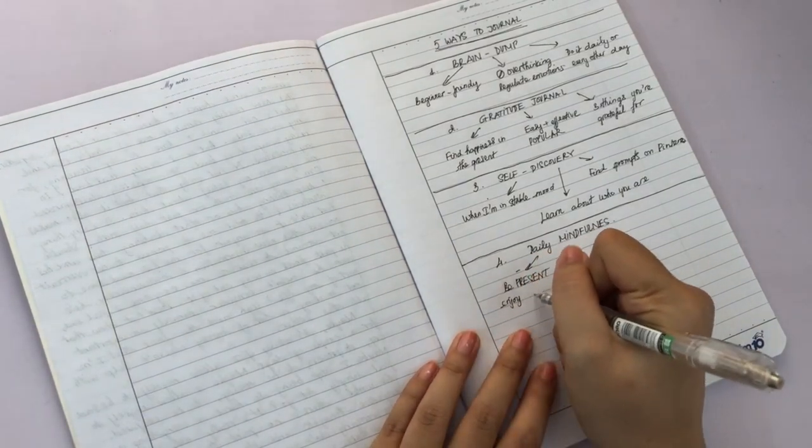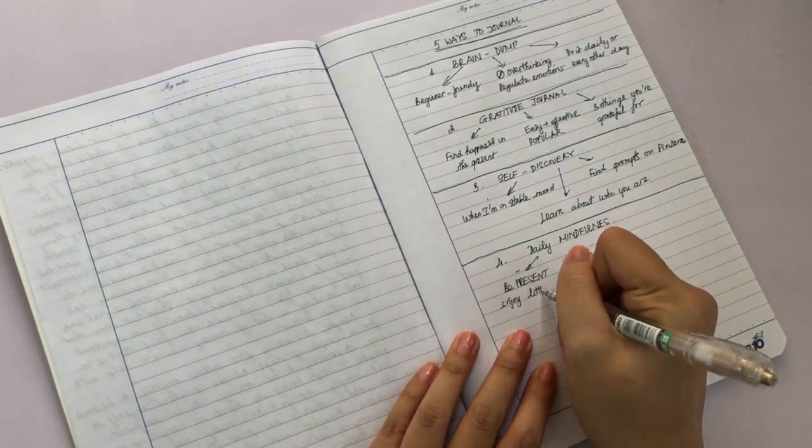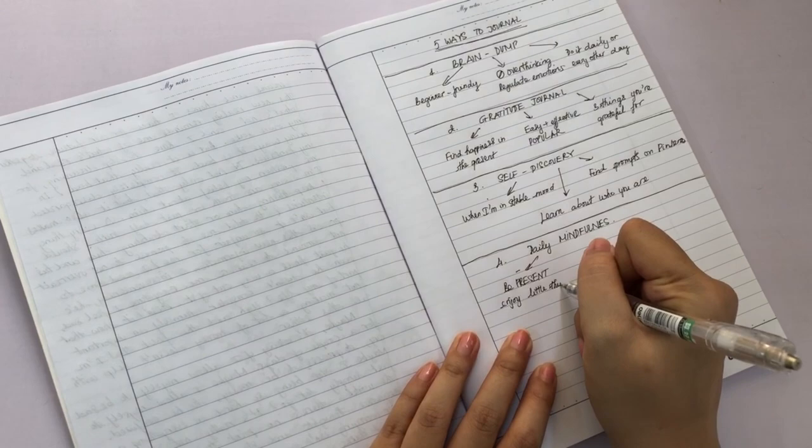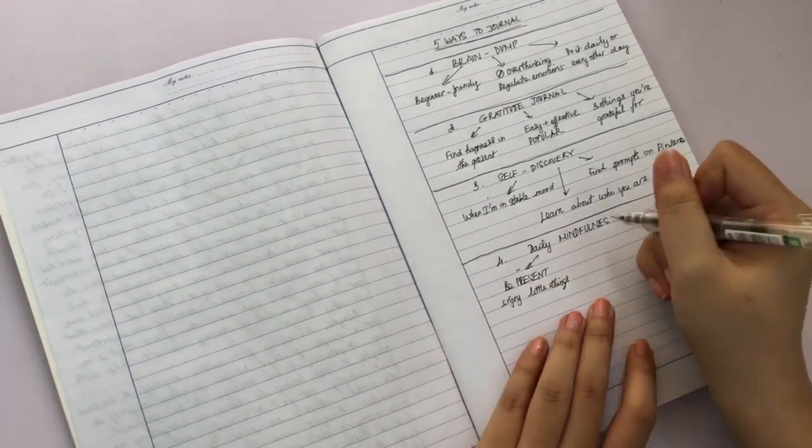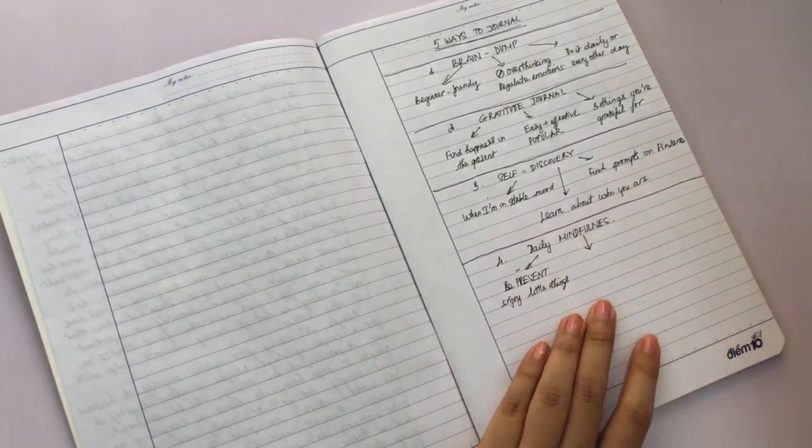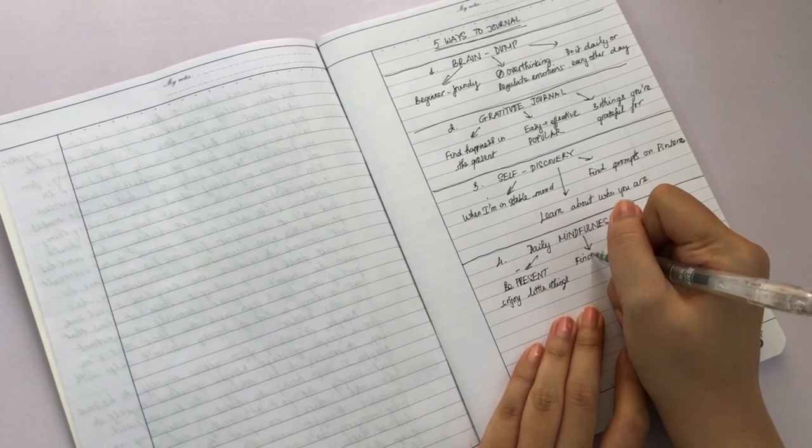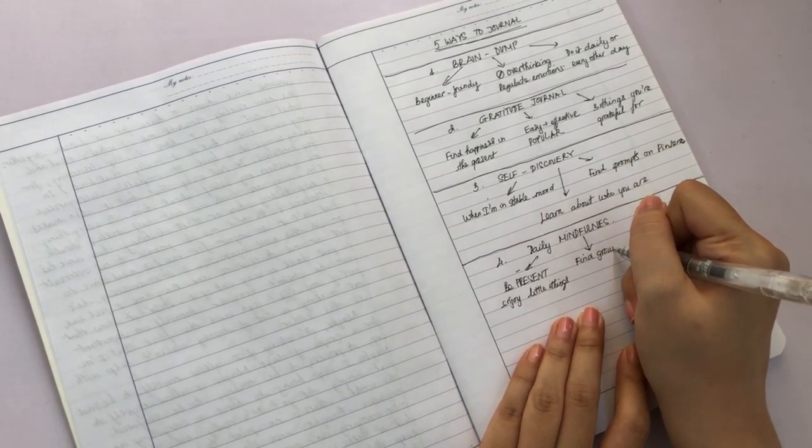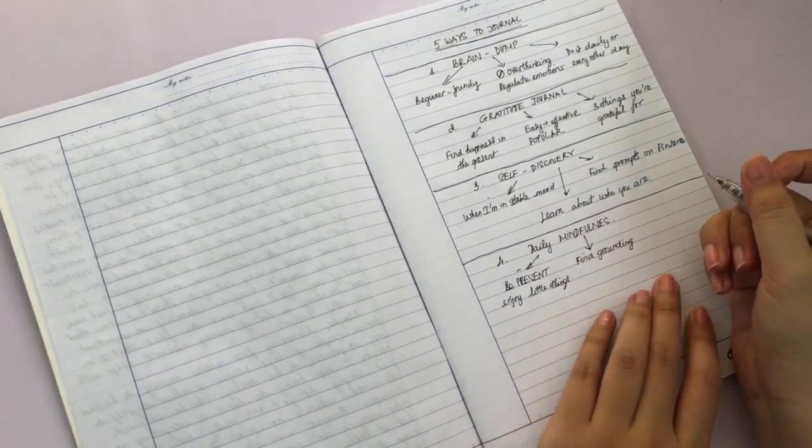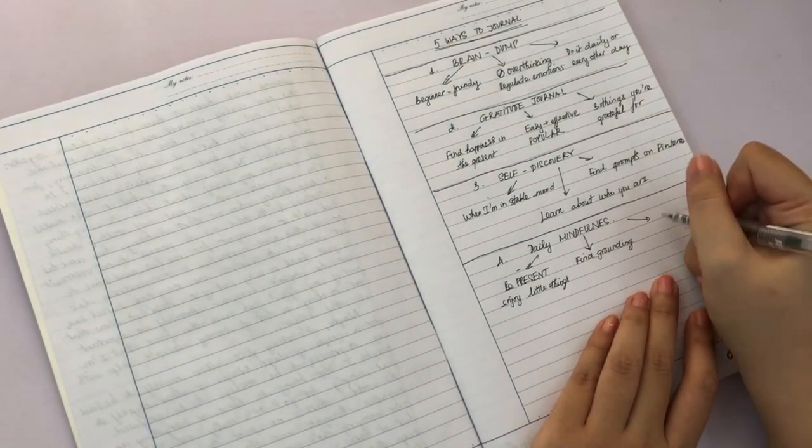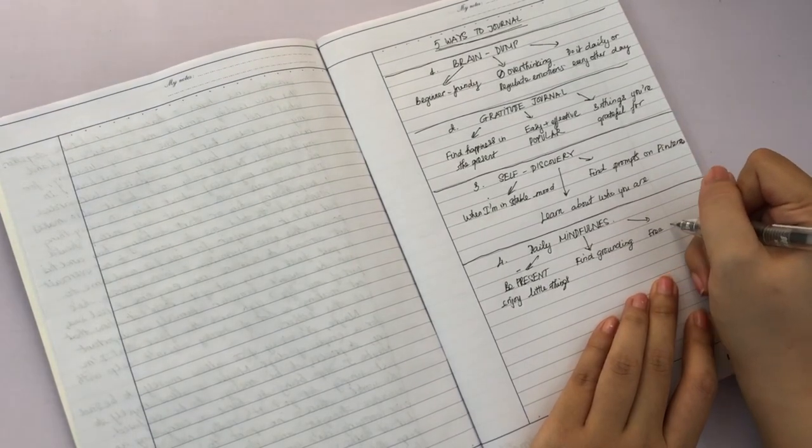You allow yourself to feel every little emotion that you need to feel. You don't judge yourself for it. After a while of regular journaling practice, I feel like I am more in balance of my emotions, but it doesn't mean that I don't have low days.